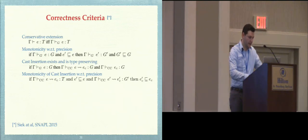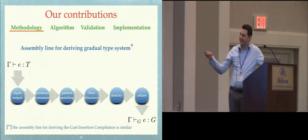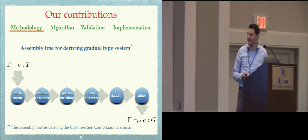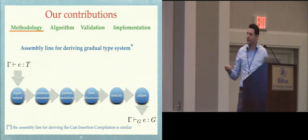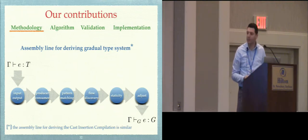Finally, the contributions of this paper — highlighted in green. First, we have a methodology for deriving the gradual type system, and also a methodology for deriving the cast insertion compilation. The methodology is a bit like an assembly line — it starts from the static type system and is a series of steps describing the operations you have to do in order to derive the gradual type system.